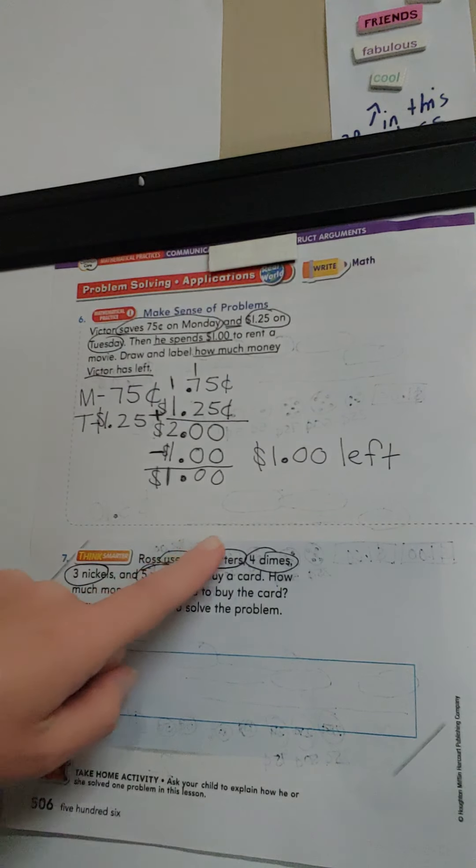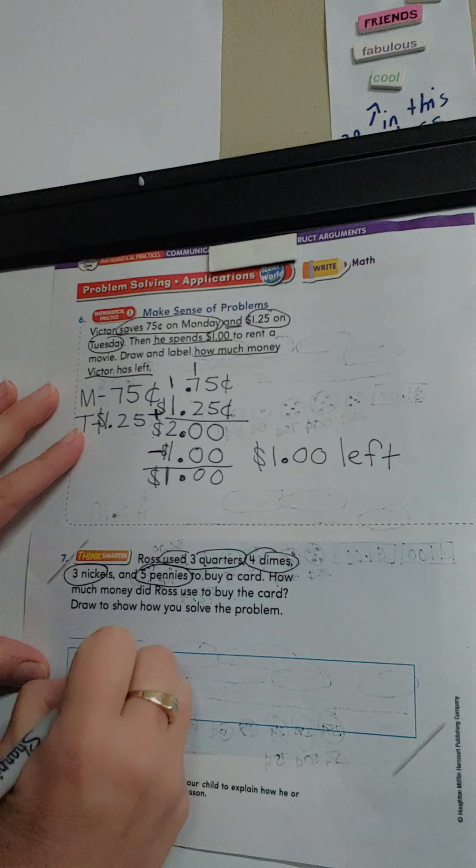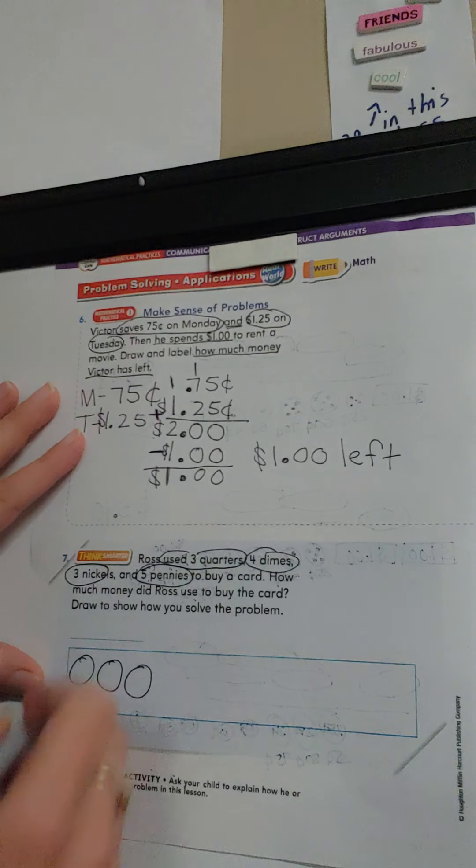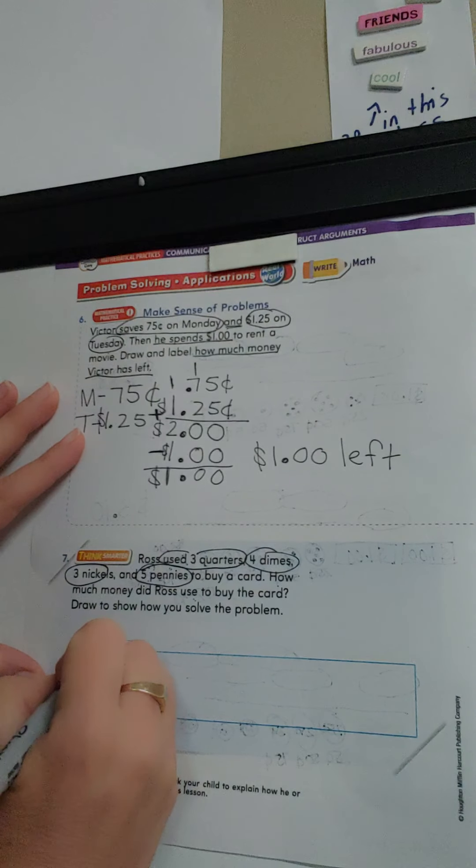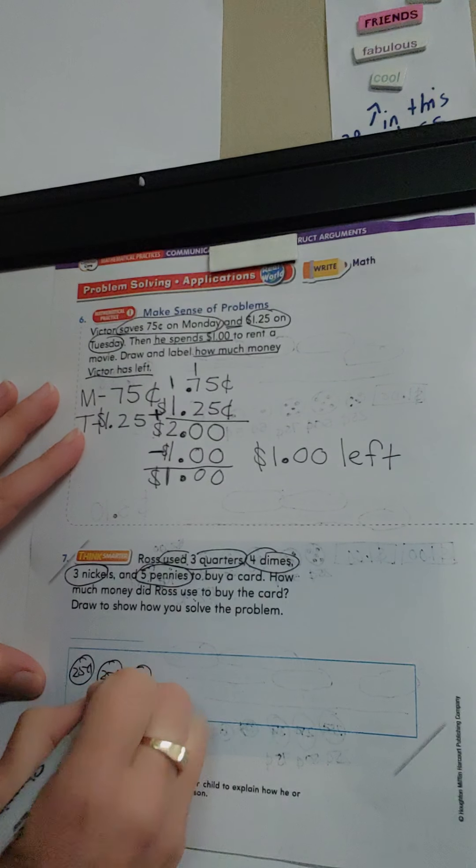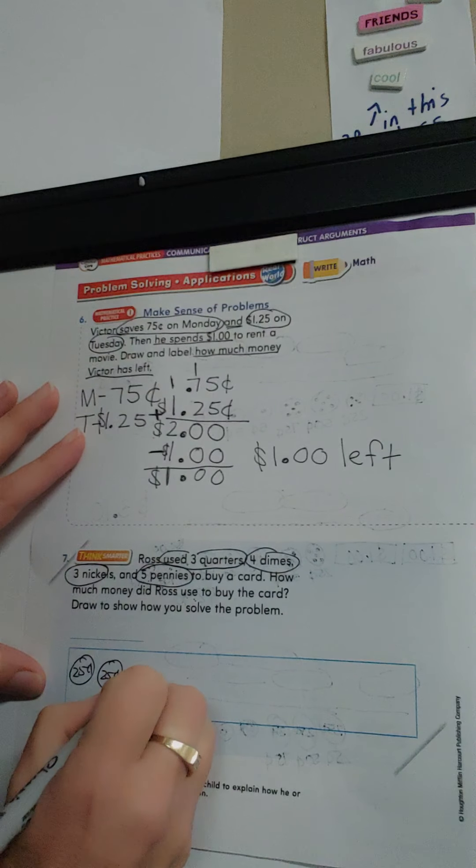I'm going to go and look which one is the most. It's my quarters. He has three. One, two, three quarters, 25 cents, 25 cents, 25 cents.